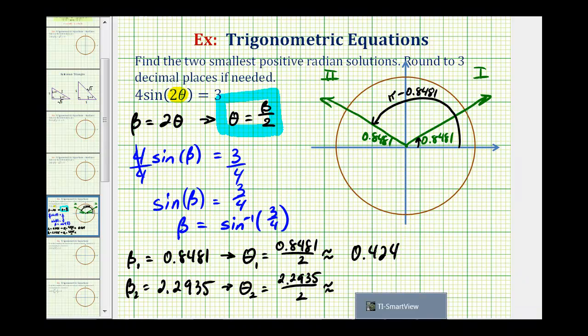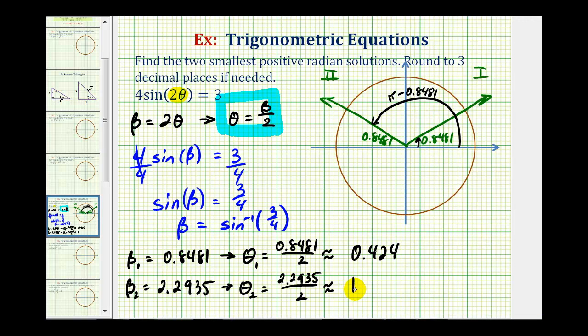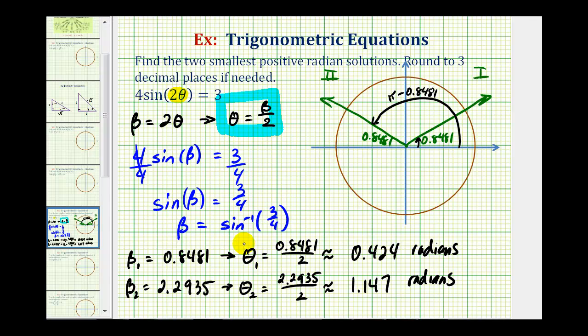Now we'll find the second solution. So theta is approximately 1.147. And of course these are both radians. These are the two smallest positive radian solutions to the original trig equation in terms of theta.